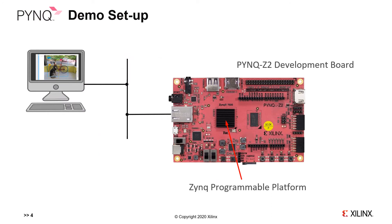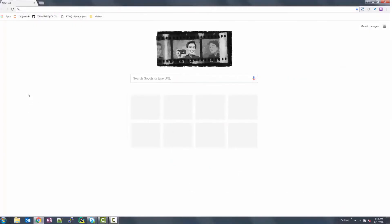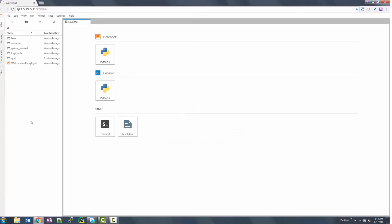Now it's time to see PINK in action. For this demonstration, we have a PINK Z2 board with a Zynq programmable platform connected over a network to a client with a browser interface. In this screencast, we start by accessing the PINK Z2 board over the network from our browser, and the board responds by launching the JupyterLab page.